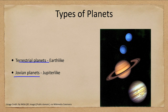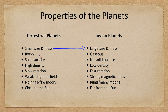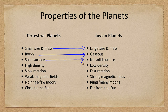We can look at the properties of these two types of planets and what we see is that they are really complete opposites of each other. The terrestrial planets are small, while the Jovian planets are large — both in size and mass. Terrestrial planets are rocky while the Jovian planets are all gaseous and icy. The terrestrial planets have a solid surface while the Jovian planets do not.